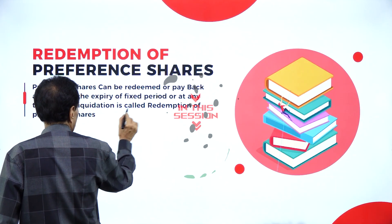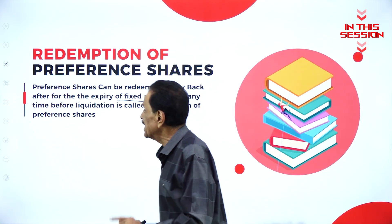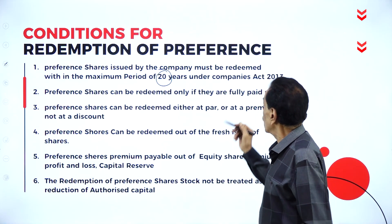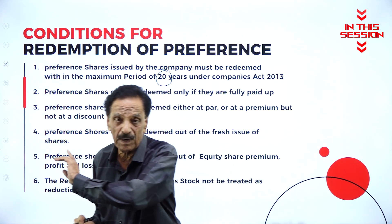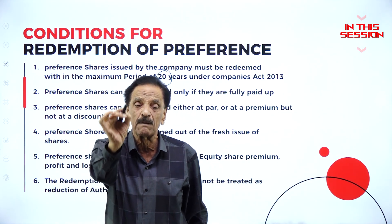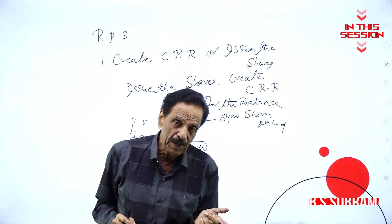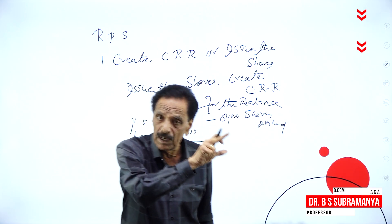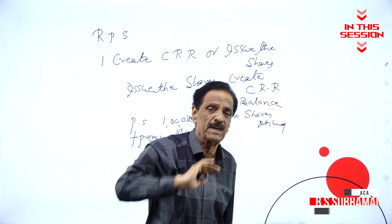Preference share redemption occurs after the expiry of the fixed period or at any time before liquidation. Only fully paid-up preference shares can be redeemed; partly paid shares cannot. The preference share premium should be paid out of equity share premium, and if equity share premium is not available, take it from the profit and loss account.